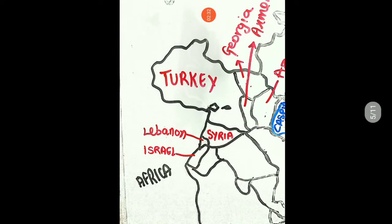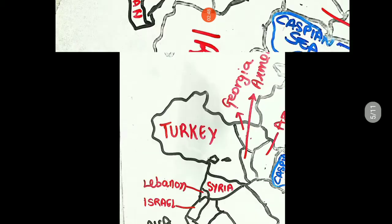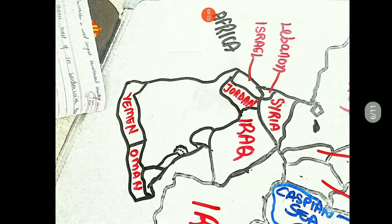There is a four-country segment: Turkey, Syria, Lebanon, Israel. Repeat: Turkey, Syria, Lebanon, Israel.